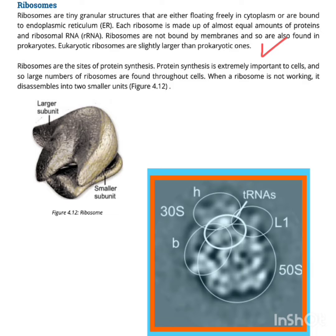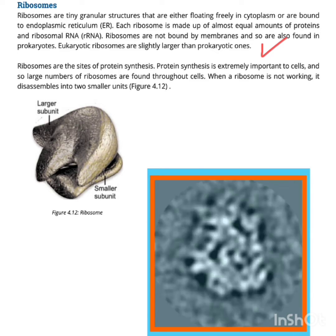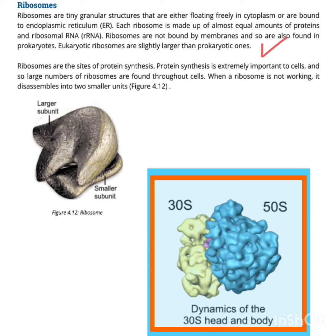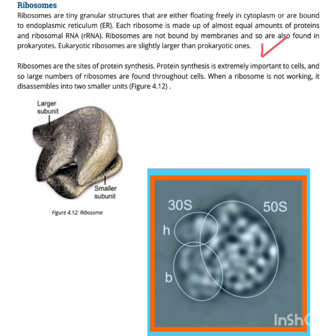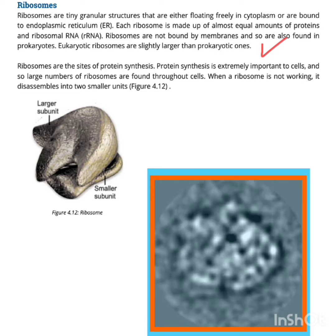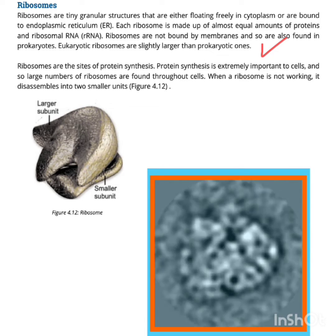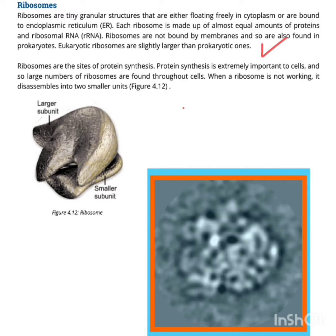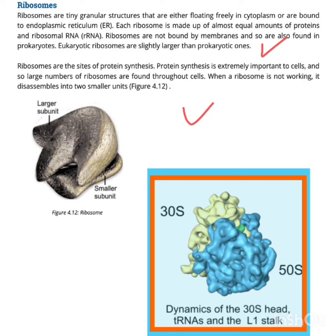What is the function of ribosomes? Ribosomes are the sites of protein synthesis. Protein synthesis is extremely important to cells, and so a large number of ribosomes are found in cells.